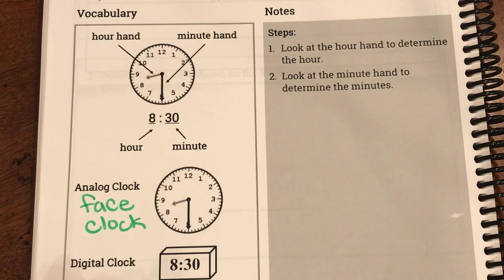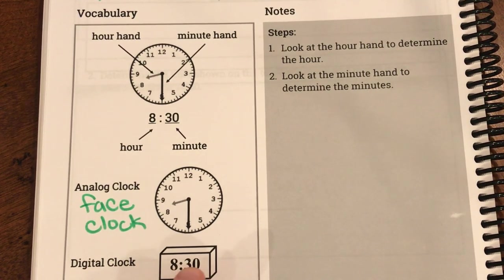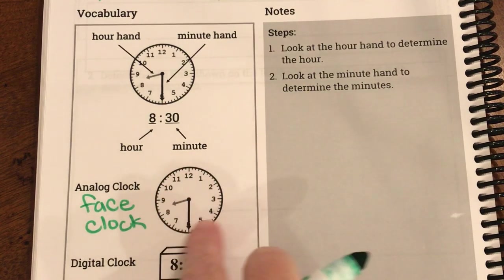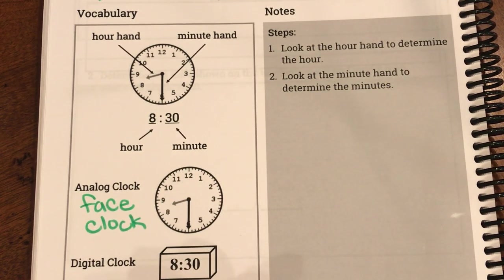Now another type of clock is a digital clock. Digital clock just has the numbers. They don't give us the circle face. It's just the numbers. So this is what you might see on maybe your iPad or a computer.